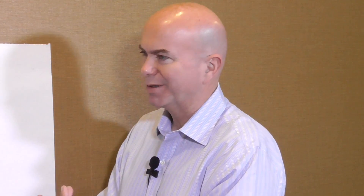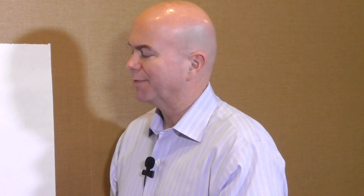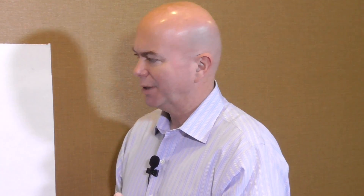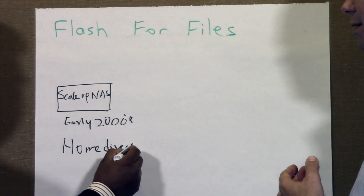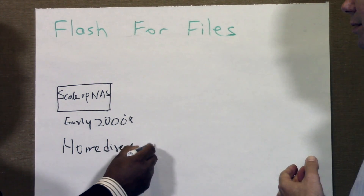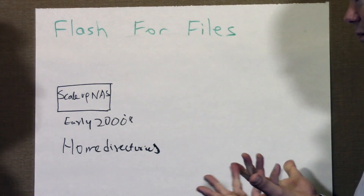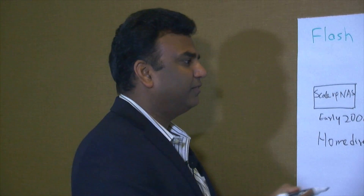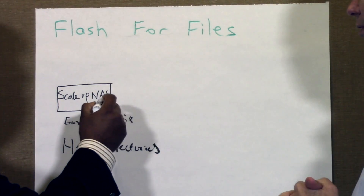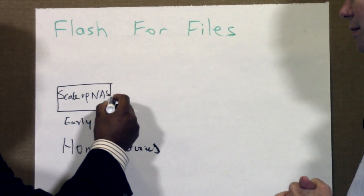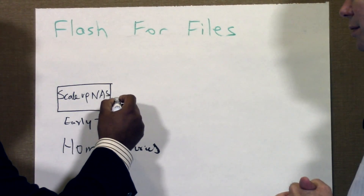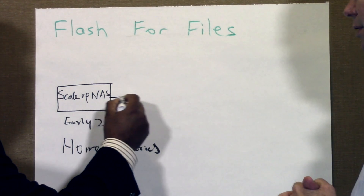That was like a lot of home directories and stuff like that, right? Yeah, the primary use case was home directories — basically a place to store your file-based data, a common shared storage for file data. It worked very well up to the early 2010s.